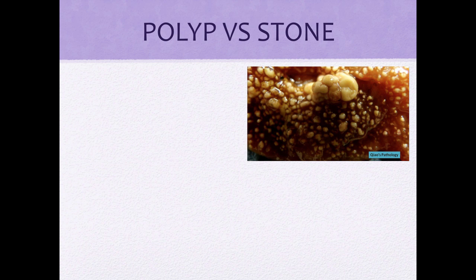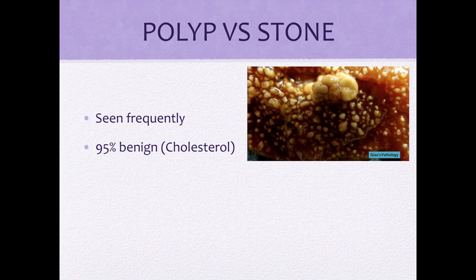A quick review of gallbladder polyps: they're lesions on the gallbladder wall which are usually incidentally found on abdominal imaging. Polyps are actually pretty frequent and can be seen in up to 7% of the population. About 95% of them are benign, and cholesterol polyps are most frequently identified in patients between 40 to 60 years old.